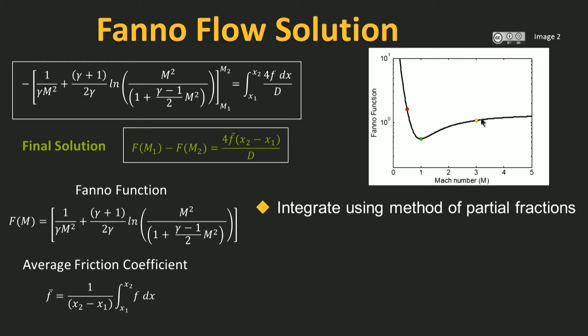Let's start by examining what happens if the flow starts out being supersonic — let's pick a point, say the yellow dot on the supersonic side. Going back to the final solution and looking at the right hand side, we see that since x2 is downstream of x1, x2 minus x1 is a positive number. F-bar, which is the average friction coefficient, is a positive number, and so is d. Therefore everything on the right hand side is positive. For this equation to hold true, the left hand side should also compute out to be positive. We picked a point M1 on the supersonic side, and corresponding to that value of Mach number there is a value for the Fanno function. The difference in the Fanno function at M1 minus the Fanno function value at M2 also needs to be positive.